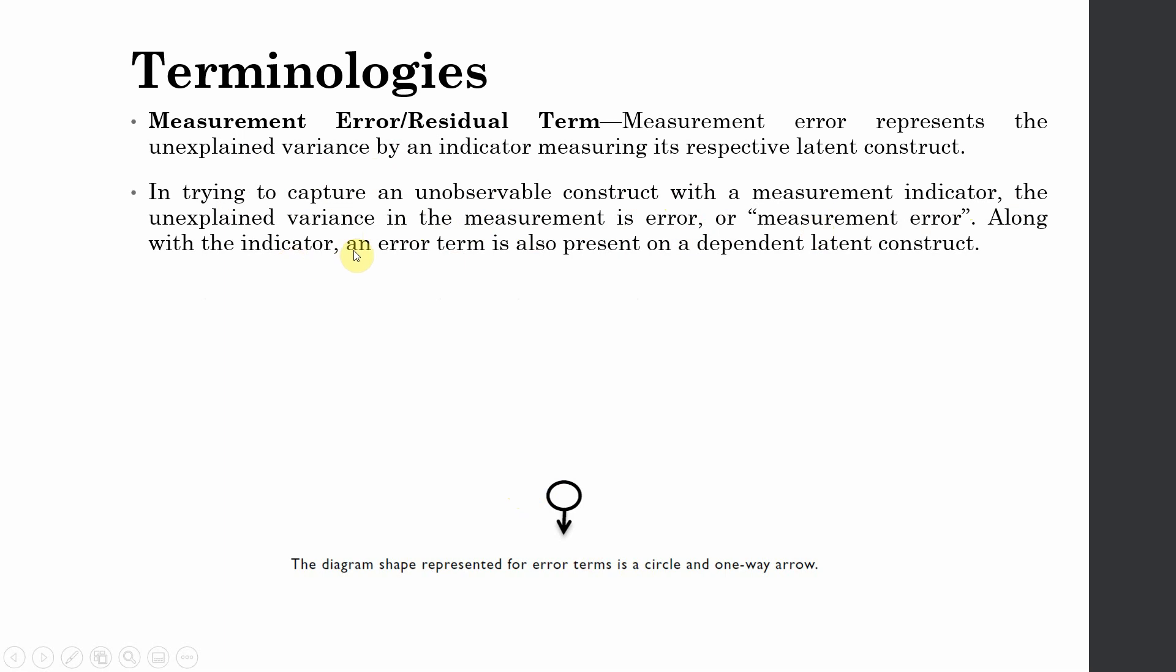Along with the indicator, an error term is also present on the latent dependent variable. Whenever you've got a dependent variable, that will have an error term as well, because some of the variance may be explained by the predictors, whereas some of the variance may be unexplained. That is also represented by the error term.